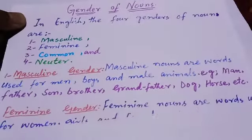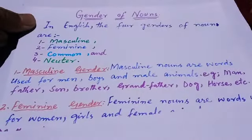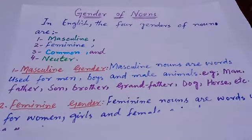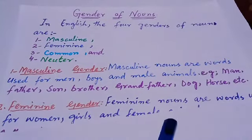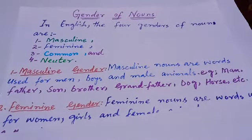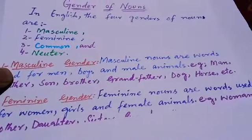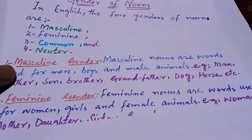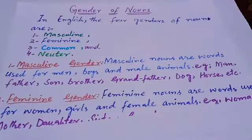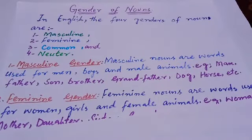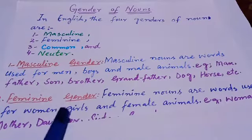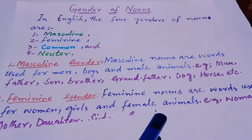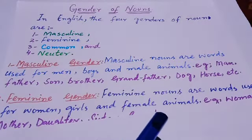The second gender is feminine gender. Feminine nouns are words used for women, girls, and female animals.